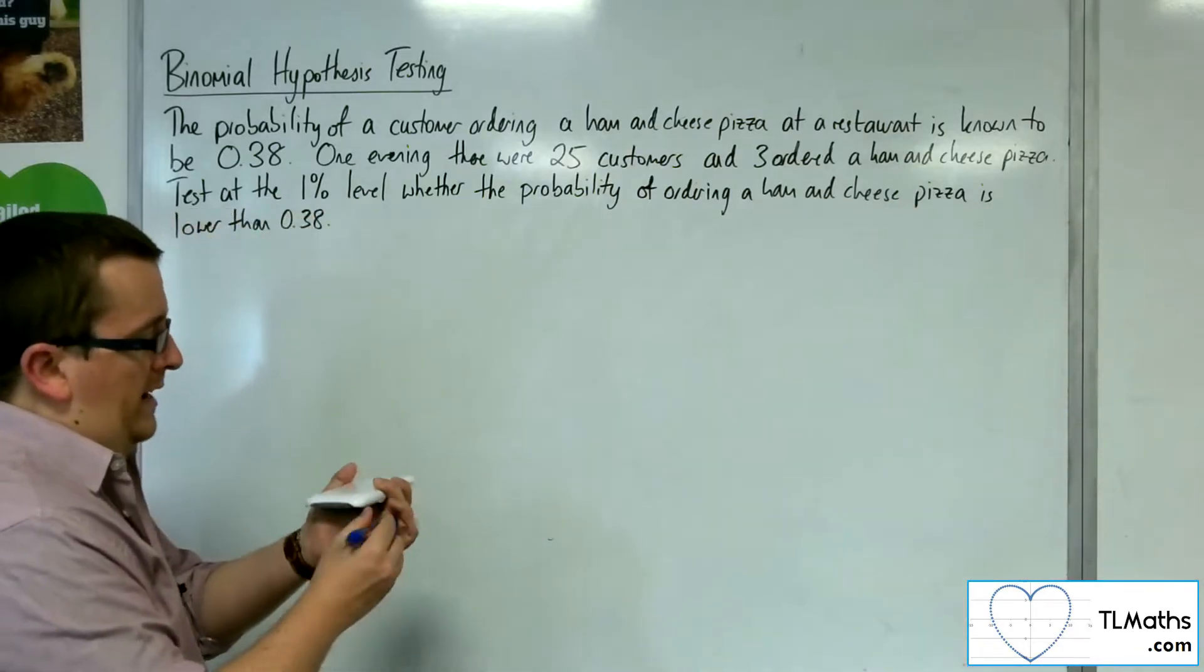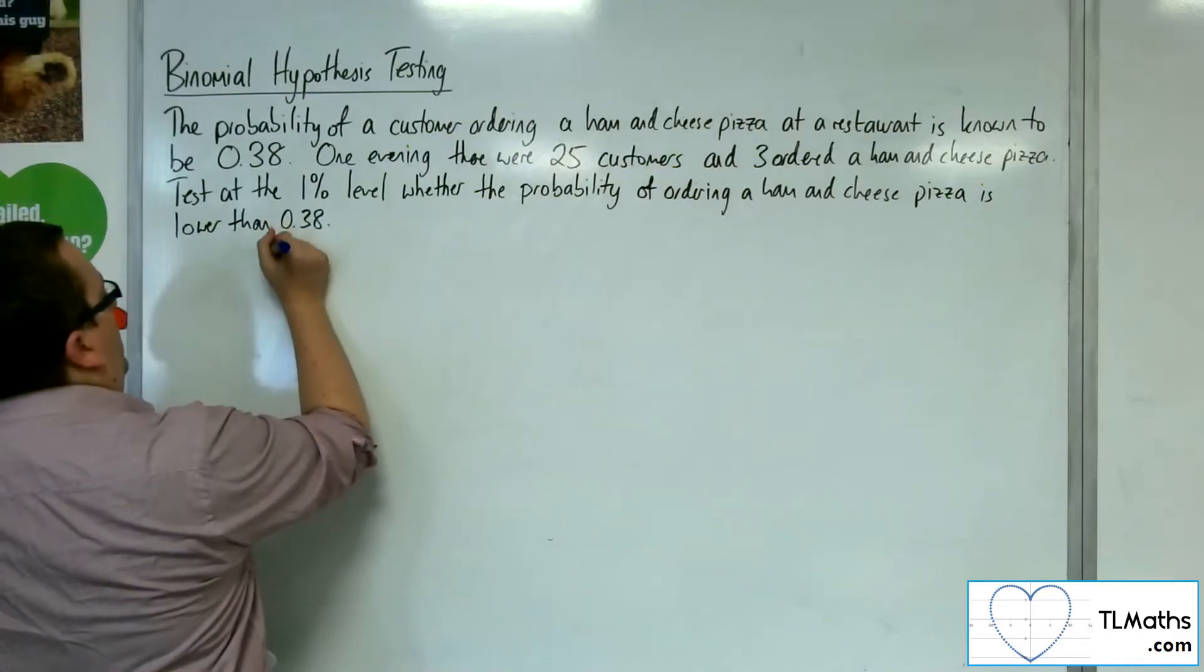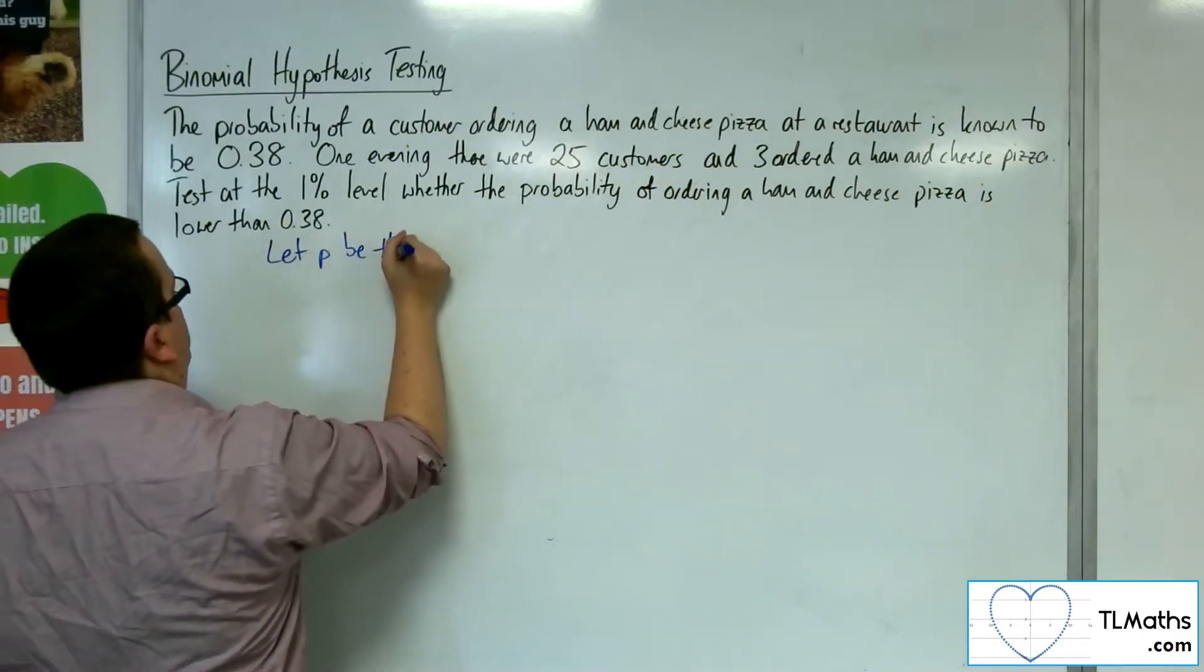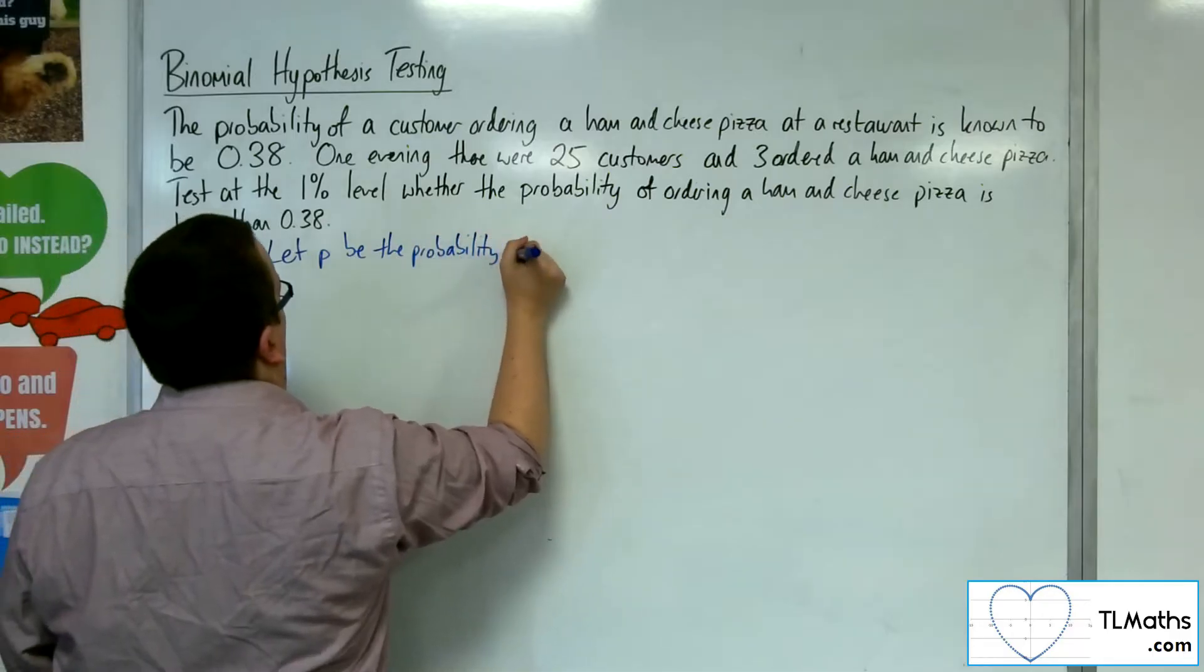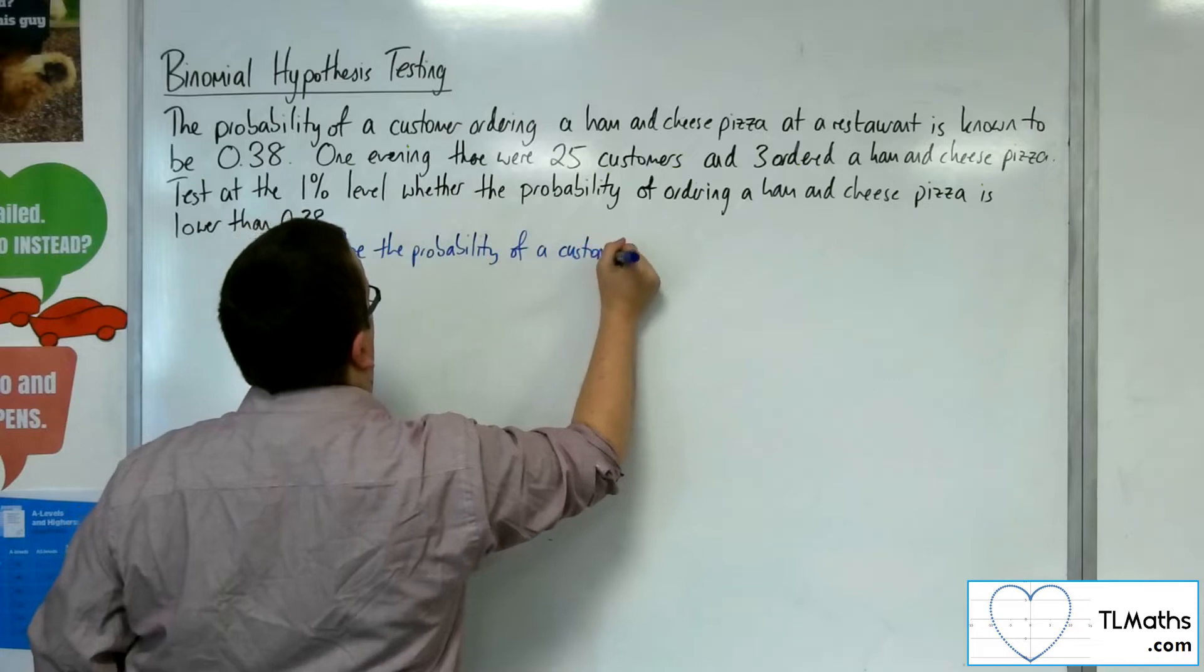So we're going to start off with our initial sentence. Let P be the probability of a customer ordering a ham and cheese pizza.